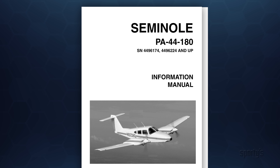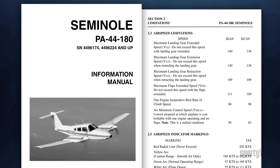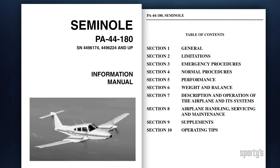These speeds will be found in the Airplane Flight Manual or Pilot Operating Handbook for your airplane. If you are flying an older twin, it's possible that the manufacturer may not have published all of them. The AFM or POH for your airplane will include the information that you have come to expect in an aircraft manual. It will also include a number of new performance charts.